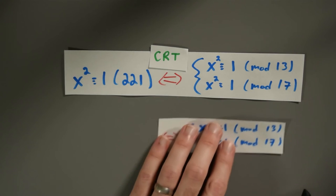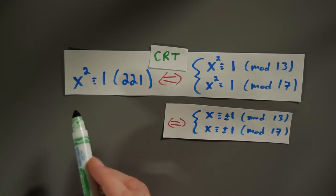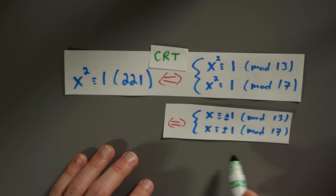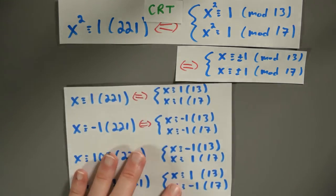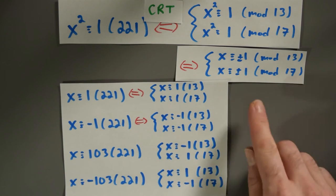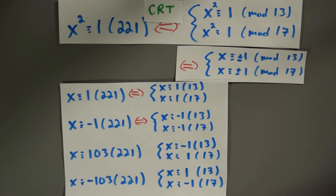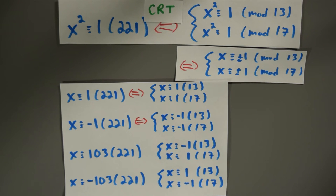So those two conditions are actually equivalent to: x≡±1 (mod 13) and x≡±1 (mod 17). That means x squared≡1 (mod 221) exactly when x is plus or minus 1 mod 13 and x is plus or minus 1 mod 17. For this quadratic polynomial we find 4 roots, because there are 4 different possibilities for the signs.